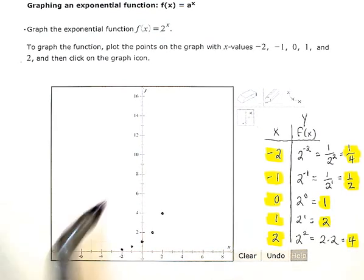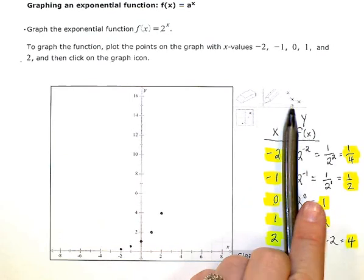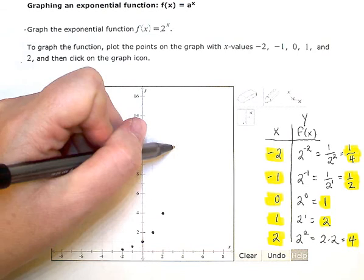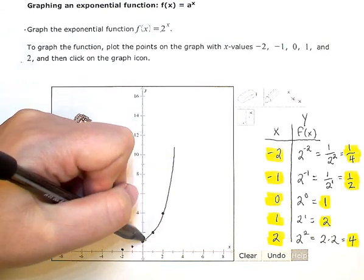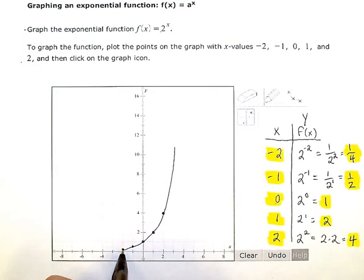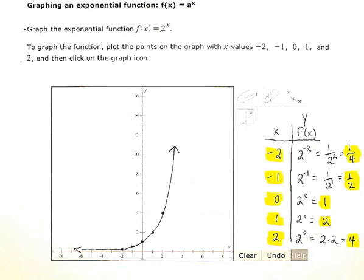Then you're going to hit this graph the line tool, and when you do that, ALEKS will automatically connect up all of those points and show you the graph, and you're done.